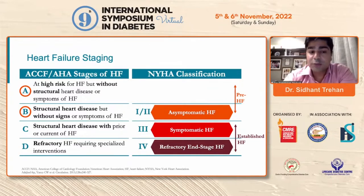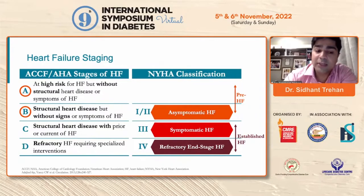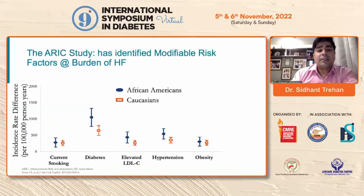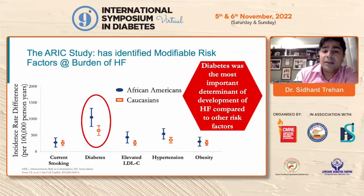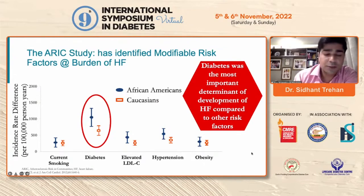Stage B includes patients who have structural heart disease but have never developed symptoms. Stage C is patients who have structural heart disease and have developed symptoms, whether on or off therapy. Stage D includes patients with refractory heart failure. The ARIC multicentric study — Atherosclerotic Risk in Communities — which included more than 100,000 patients, showed that diabetes was one of the strongest modifiable risk factors for heart failure.